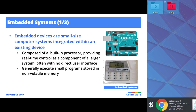Generally speaking, a telltale sign of embedded systems is no direct user interface. This connects to our discussion about space exploration — New Horizons, where it takes six hours for a signal to travel, twelve hours round trip. There's no user interface; the only way humans interact with onboard computer systems on a space probe is remotely, sending a signal. But do not be deceived — it's not always the case that if a computer system has no user interface, it's an embedded system. Certain servers also lack a direct user interface.